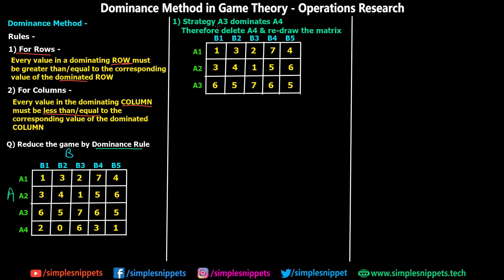In step number one, strategy A3 dominates strategy A4, therefore delete A4 and redraw the matrix. For rows, the rule is: every value in the dominating row must be greater than or equal to the corresponding value of the dominated row. A3 dominates A4 because every value in A3 — that is 6, 5, 7, 6, 5 — is greater than or equal to every value in A4: 6 > 2, 5 > 0, 7 > 6, 6 > 3, 5 > 1. So we delete the entire row A4 and redraw the matrix without A4.